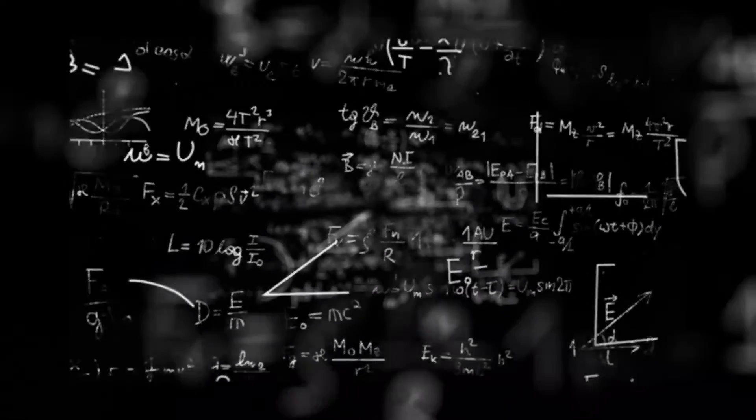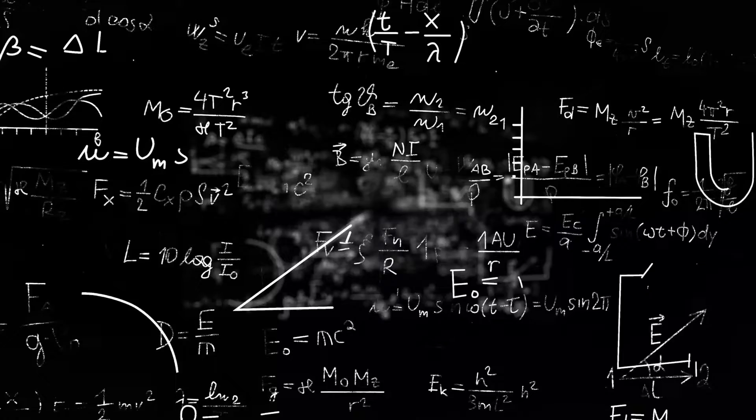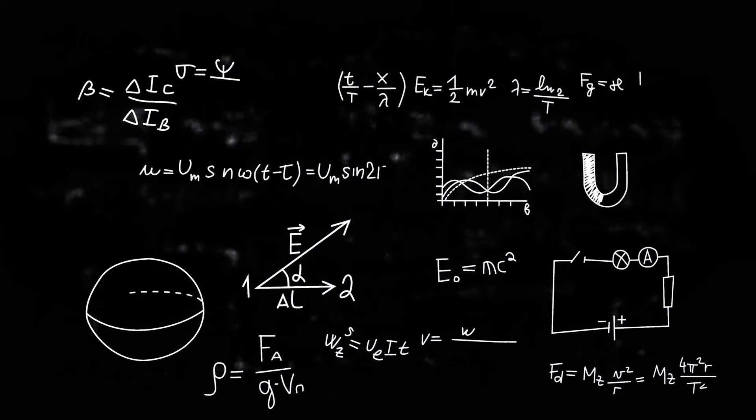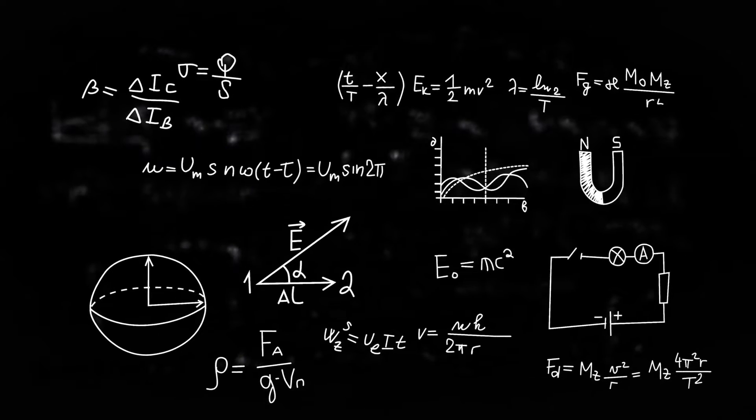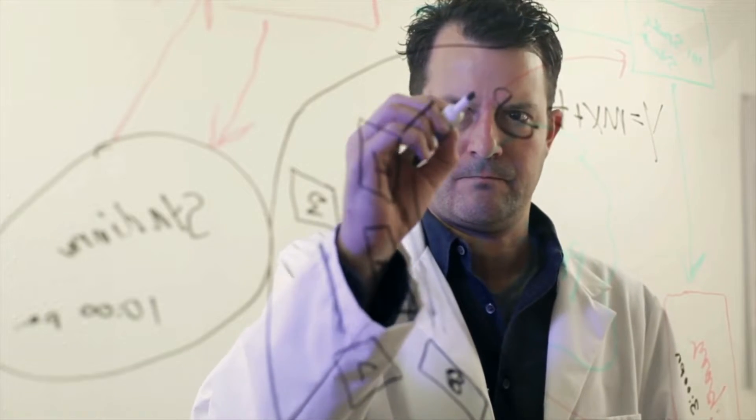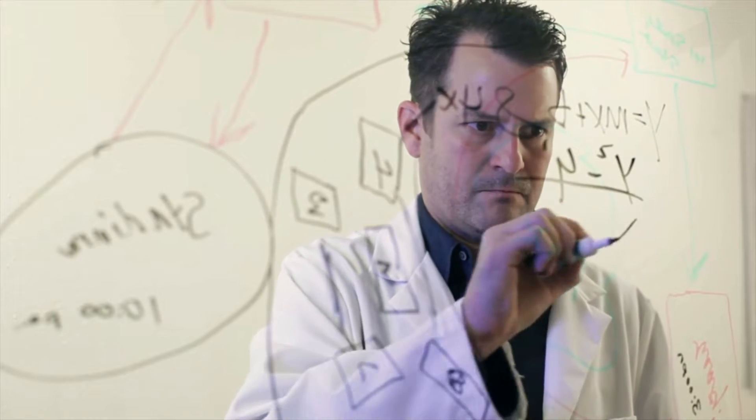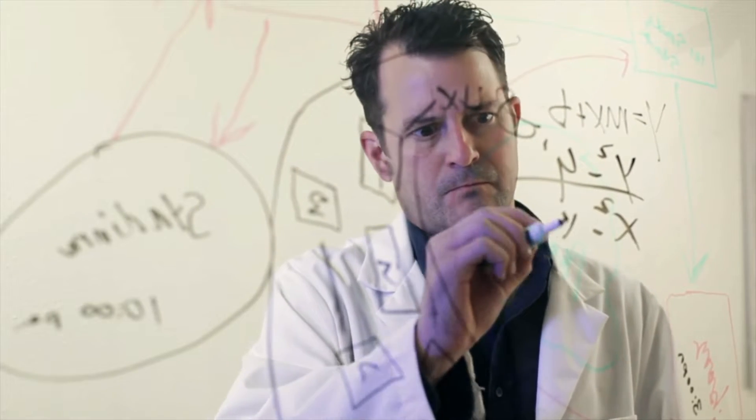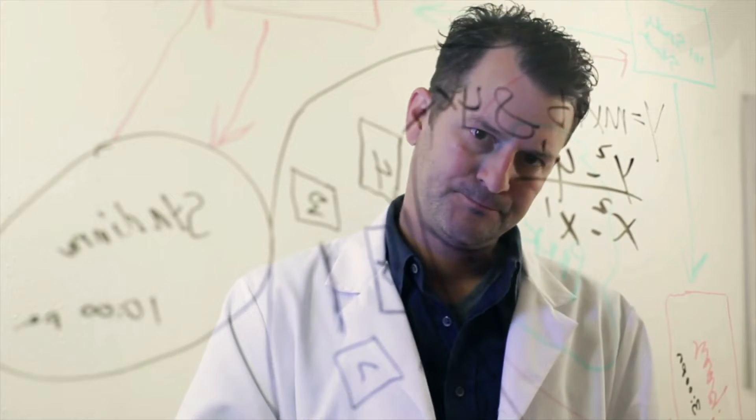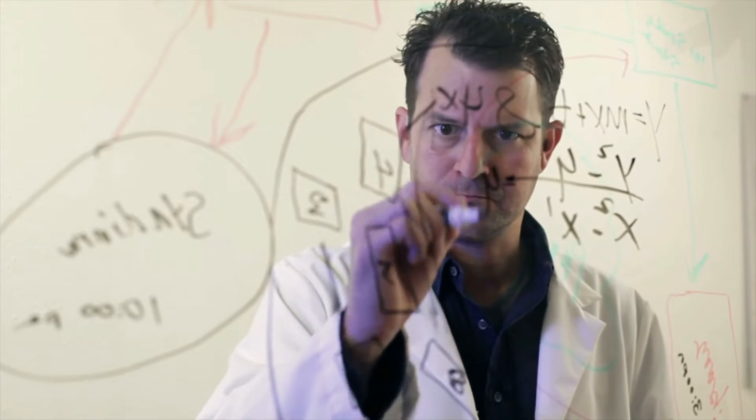the national average math score for fourth grade fell by five points since 2019 from 241 to 236 out of a possible 500, and eight points for eighth grade from 282 to 274. Playing some math with math scores, this tells us that the average fourth grader before the pandemic was scoring less than 250 on a test with a top score of 500, getting only a little less than half of the math questions marked correct,